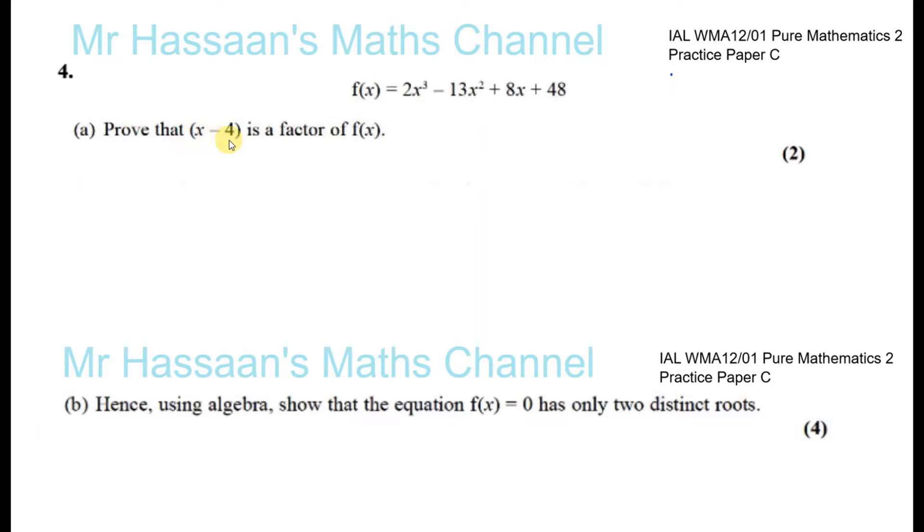We've got to prove that x minus 4 is a factor of f(x), so this is using the factor theorem. Basically, if we substitute into f(x) the value of x that makes this bracket 0, then f(x) will equal 0. Because if it's a factor, there will be no remainder when you substitute it in.